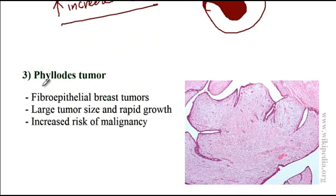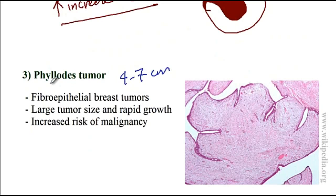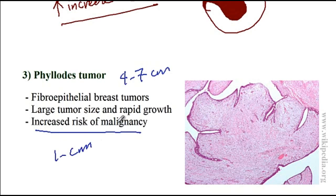The final benign breast tumor is the phyllodes tumor, which is a fibroepithelial tumor with a large size and rapid growth — it can be four to seven centimeters. This type of tumor has increased risk of malignancy, so it is recommended to excise the lesions with one centimeter margins.